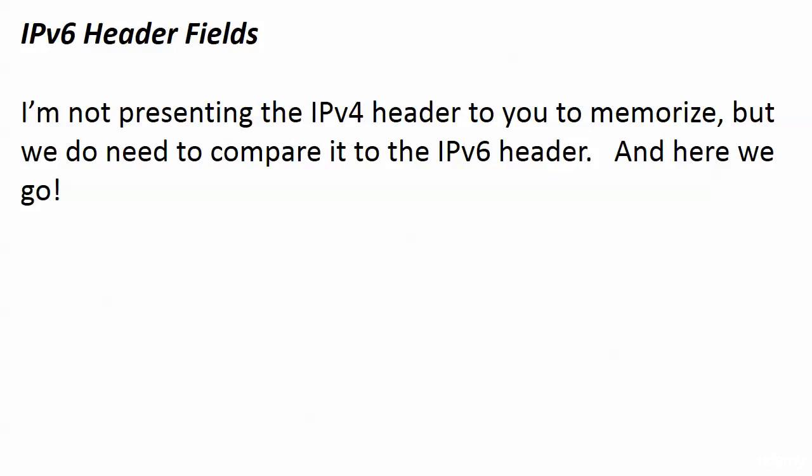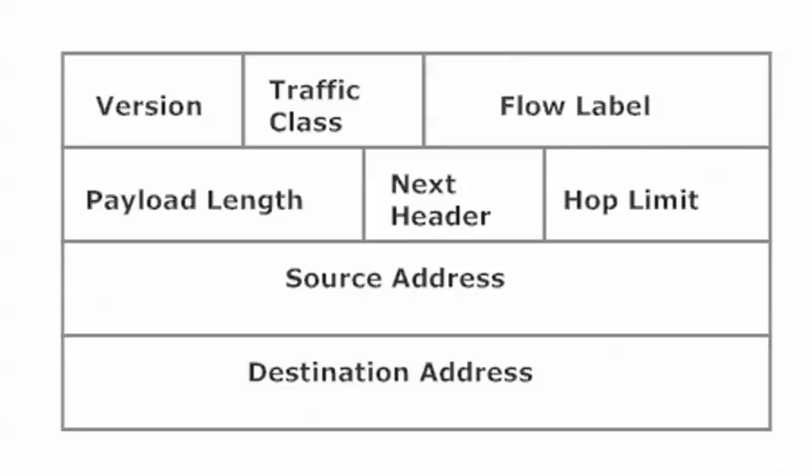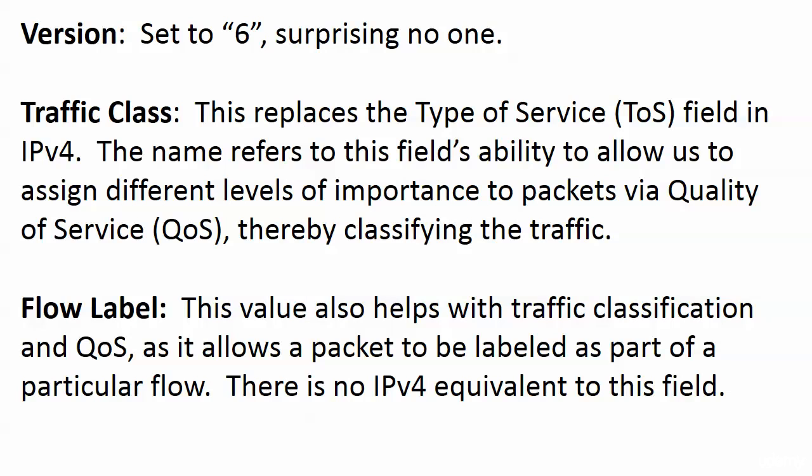I'm going to show you the version 4 IP header first - not for memorization, but you should be aware of it and be able to recognize it, and I want to compare it to the version 6 header. The version 4 header is pretty busy with a lot of little fields. Source and destination addresses carried over, but many other fields got dropped, a couple got revamped and renamed, and there is only one truly new field in the version 6 header.